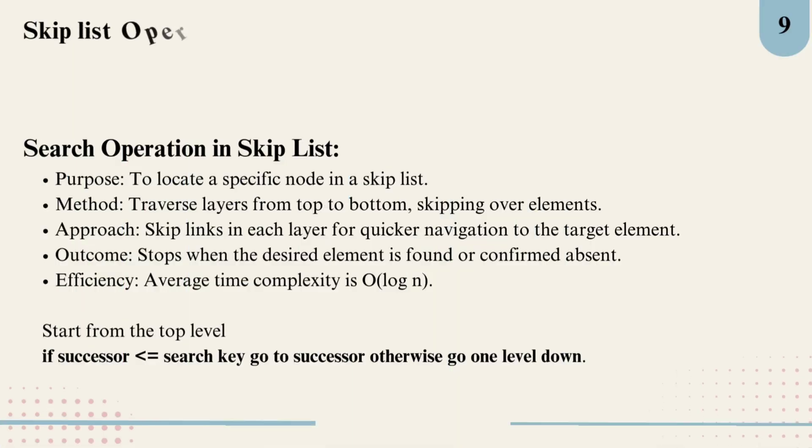Now let's dive into the operations of a skip list, focusing on search, insertion, and deletion. Search operation in a skip list: the purpose of this is the goal is to locate a specific node in the skip list. The method we use is we traverse the list from the top layer down to the bottom, skipping over nodes for faster navigation. The approach we use is: starting at the top level, if the successor node is less than or equal to the search key, we move to that successor.